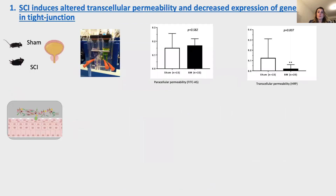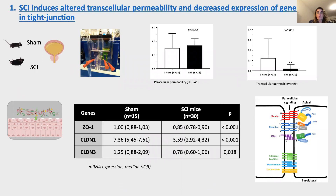Regarding the results on permeability, no change was observed in paracellular permeability. However, a significant reduction in transcellular permeability was observed in spinal cord injury as compared to sham mice. This was associated with a significant reduction in mRNA expression of ZO1, claudin-1, and claudin-3, known to be involved in tight junction regulation.